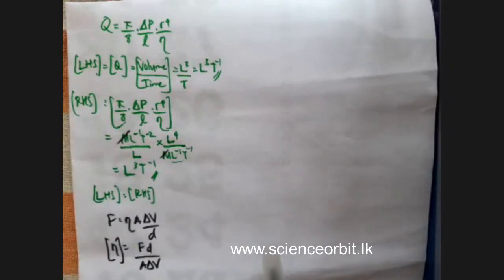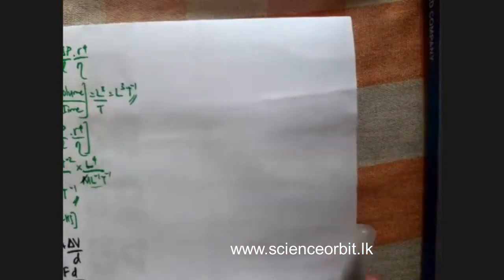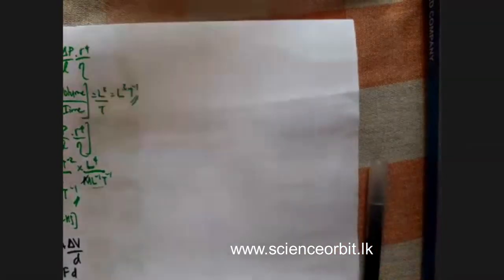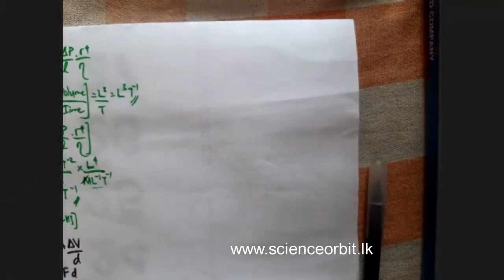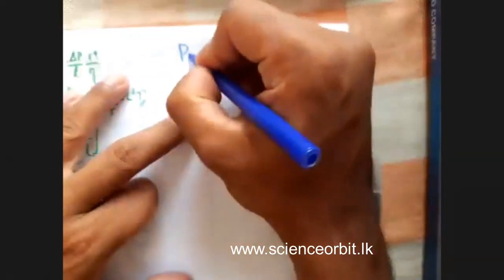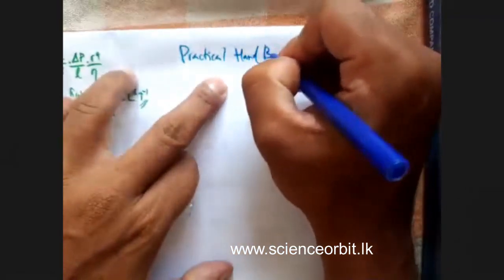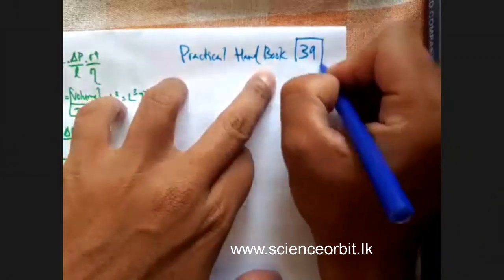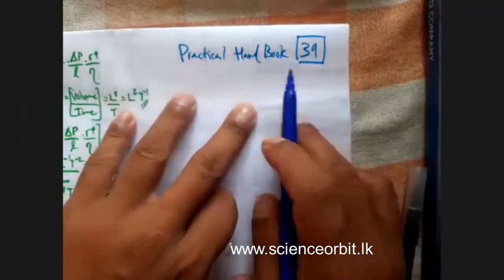Before we move on to the next equation, there is one practical we need to learn in viscosity. That experiment is to determine the coefficient of viscosity of a fluid using Poiseuille's equation. If you are using a practical handbook, this is experiment number 39.